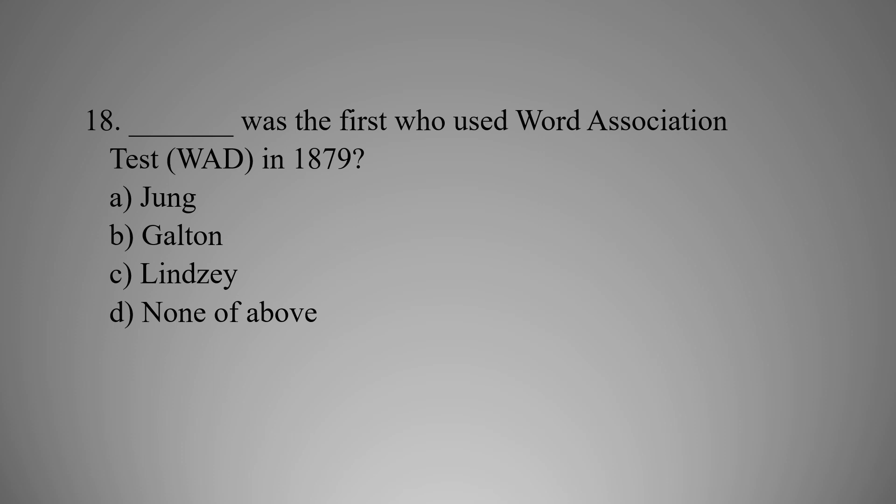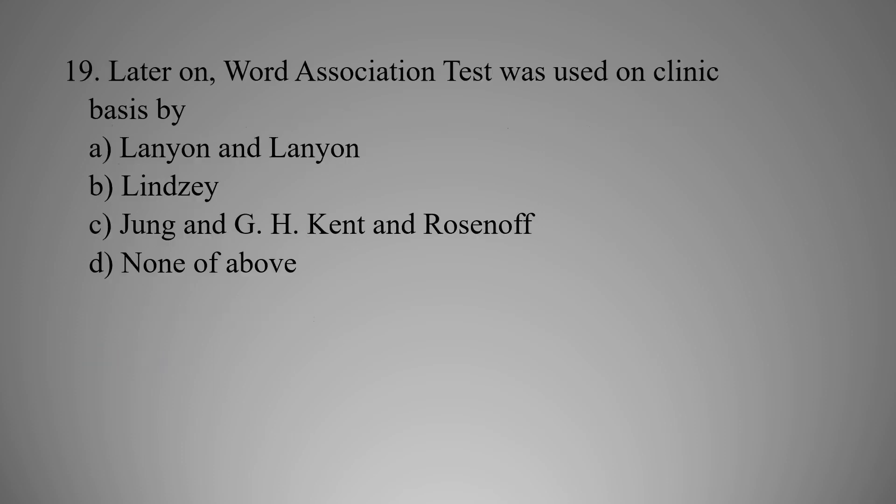MCQ number eighteen: Who was the first to use the Word Association Test (WAT) in 1879? Option A: Jung, Option B: Galton, Option C: Wundt, Option D: None of the above. The right option is B — Galton.